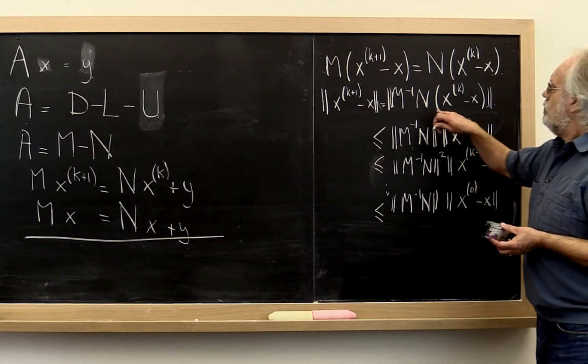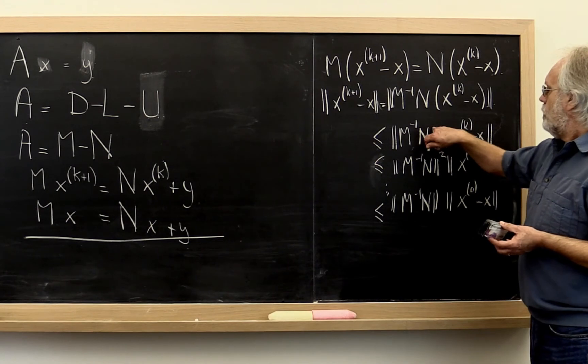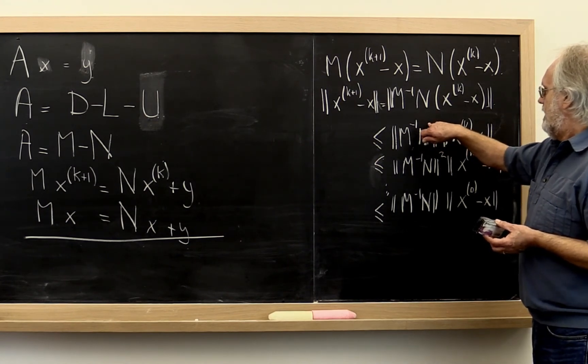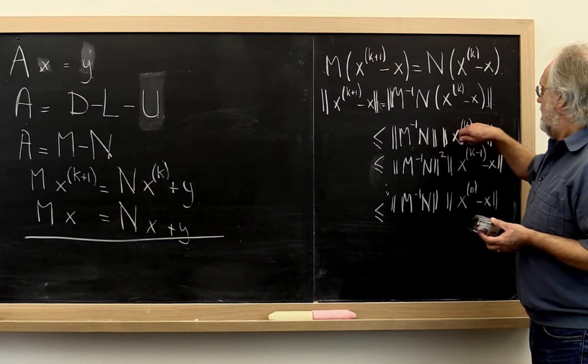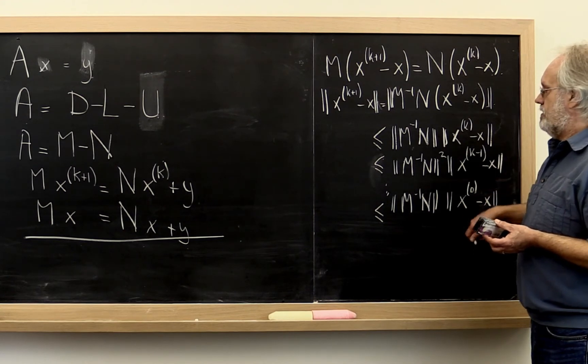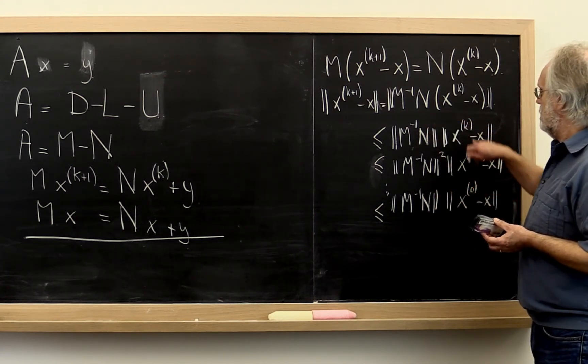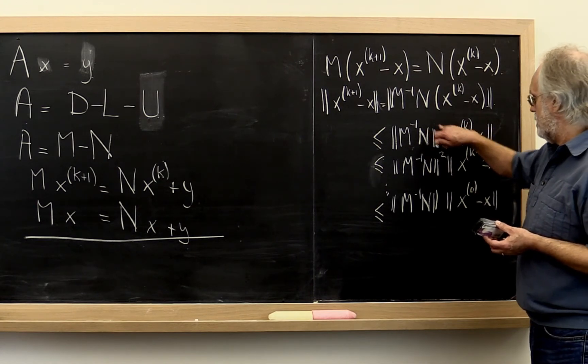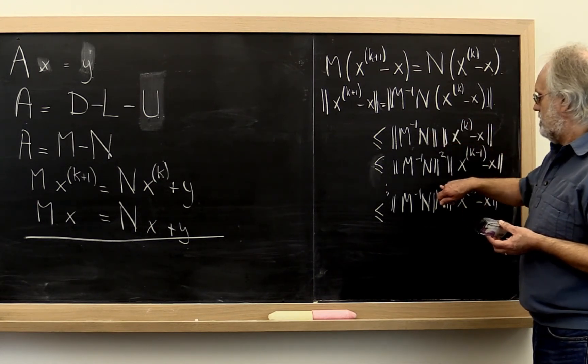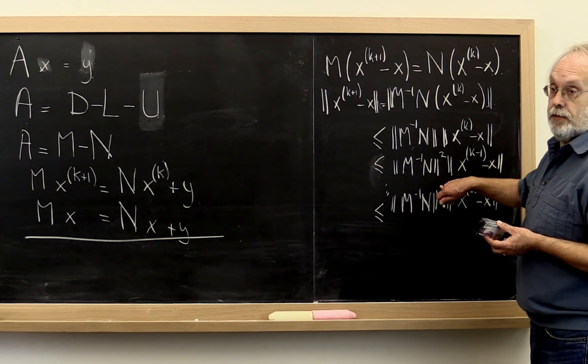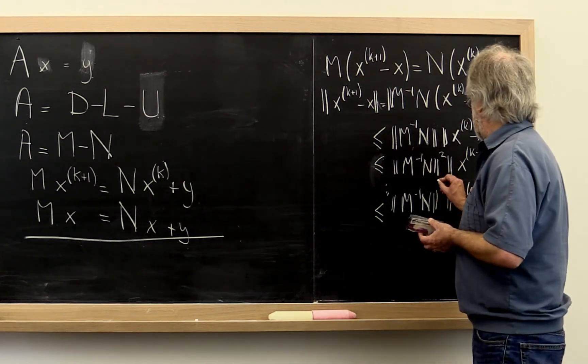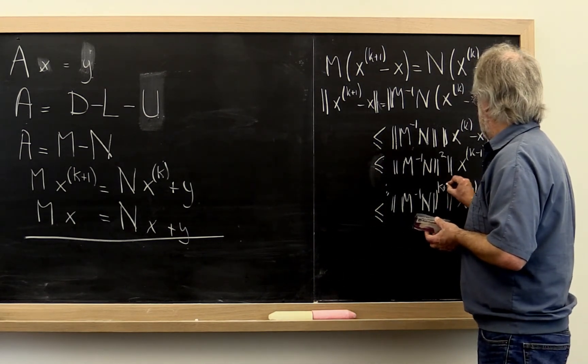If you look at it, the power that you raise this to increases every time. And this here decreases every time. So this plus this has to be kept constant. This plus this power is k plus 1. So 0 plus this power has to be k plus 1. So this is raised to the k plus first power.